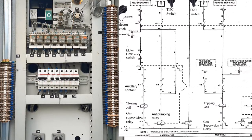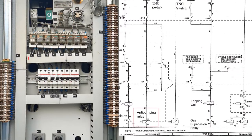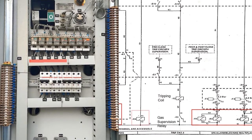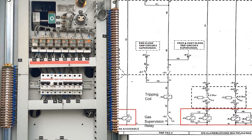Moving downwards, K1 is the anti-pumping relay, K2, K3, K4, K5 are the gas supervision relays, K6 and K7 are DC failure relays.